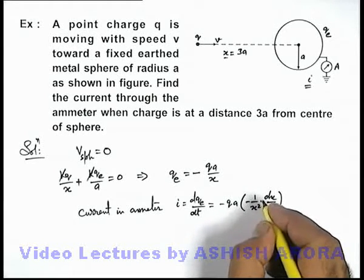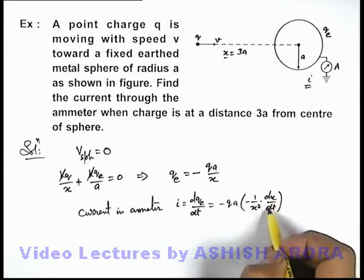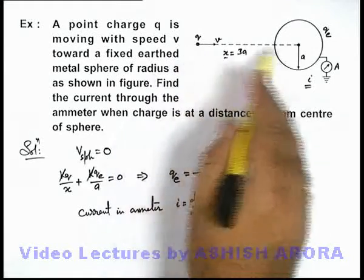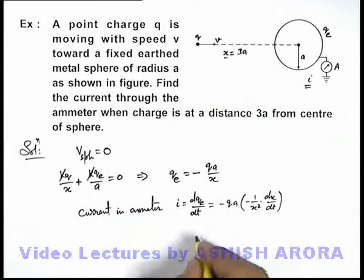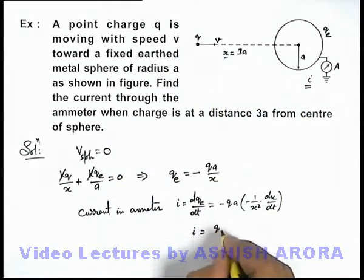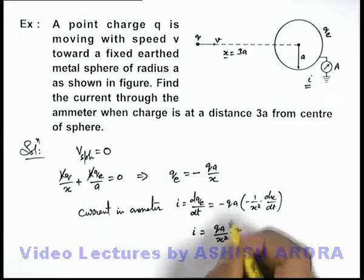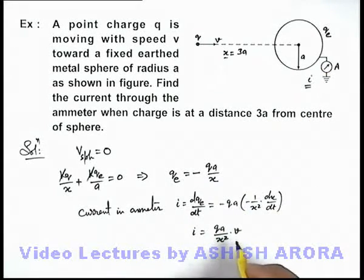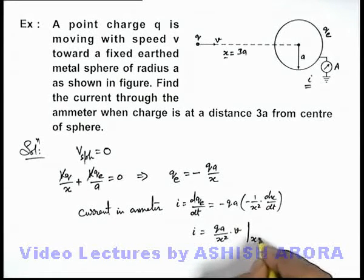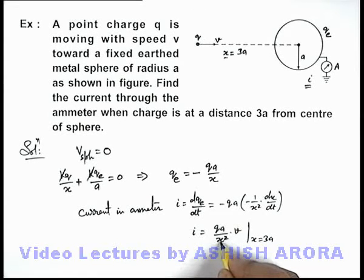And here you can see this dx by dt we can write as negative of v, or in magnitude of current we can write qa by x square multiplied by v. That is the magnitude of current through the ammeter. We need to find the value of current when x is equal to 3a, so if we substitute the value of x equal to 3a here, this 1a gets cancelled out.